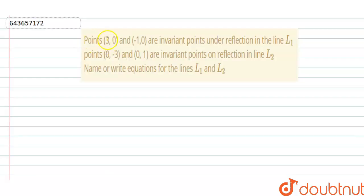Hello everyone. The question says that point 3 comma 0 and minus 1 comma 0 are invariant points under the reflection in the line L1 and point 0 comma minus 3 and 0 comma 1 are invariant points on the reflection in the line L2. Name or write the equations for the lines L1 and L2.